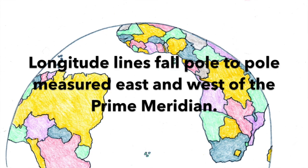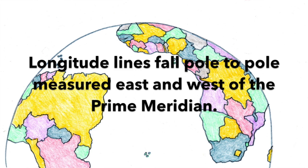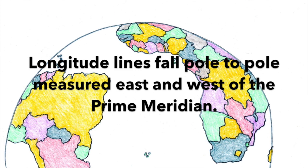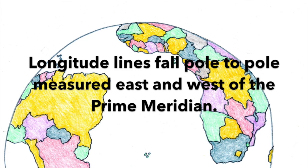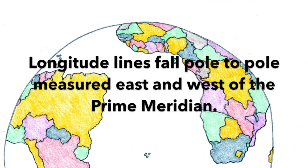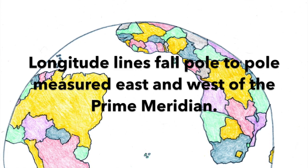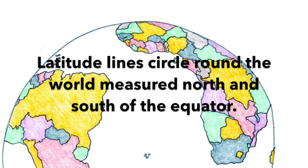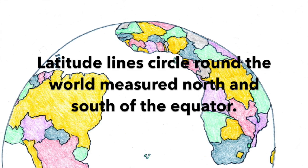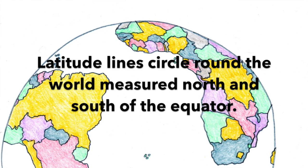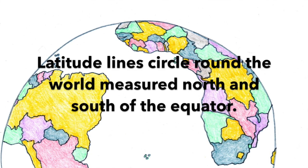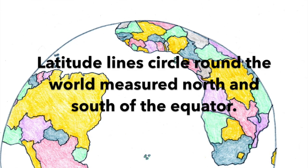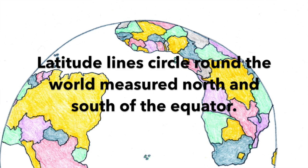Longitude lines fall pole to pole, measured east and west of the prime meridian. Latitude lines circle round the world, measured north and south of the equator.